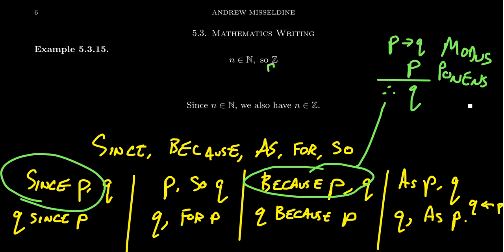We can improve it in the following way: Since n is a natural number, we also have that n is an integer. Notice the word 'also' here is just a different version of 'so.' The 'also' conjunction there is just suggesting that there's a 'so.'